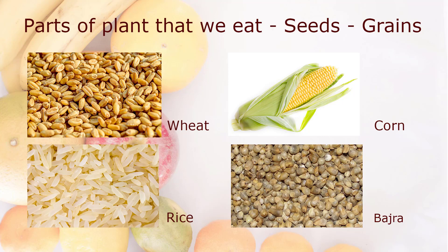Parts of plants that we eat — Grains: wheat, corn, rice, and bajra.